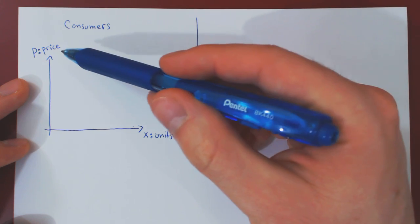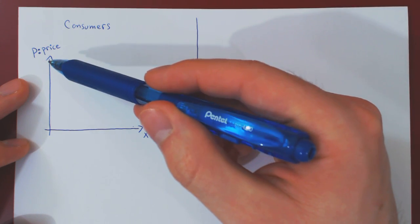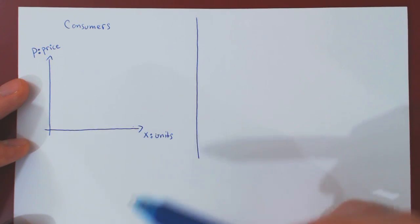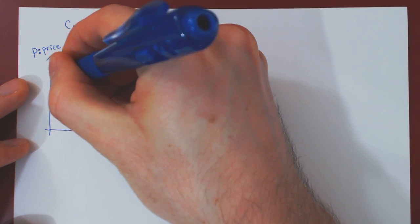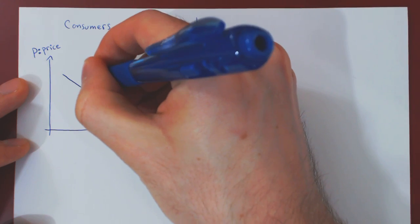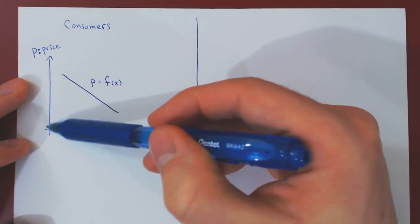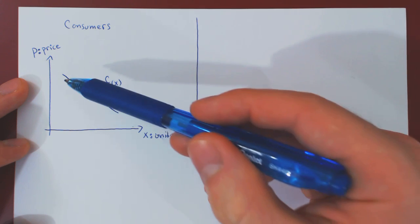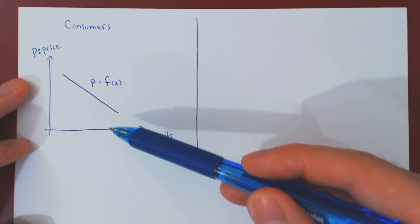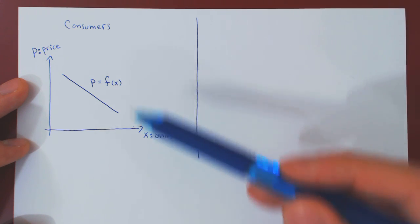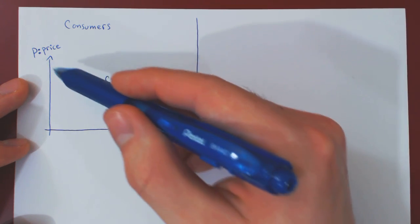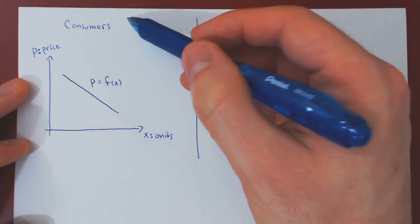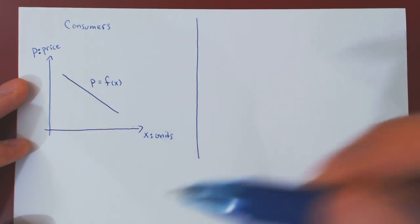The one thing which is obvious is that it is a negative relationship. As the price decreases, consumers are willing to purchase more units of the given product. P given as a function of X: the higher the price, the fewer units consumers are willing to purchase; the lower the price, the larger number of units consumers are willing to purchase. So we have a negative relationship between the unit price and the number of units consumers are willing to purchase, and we call this function the demand function.